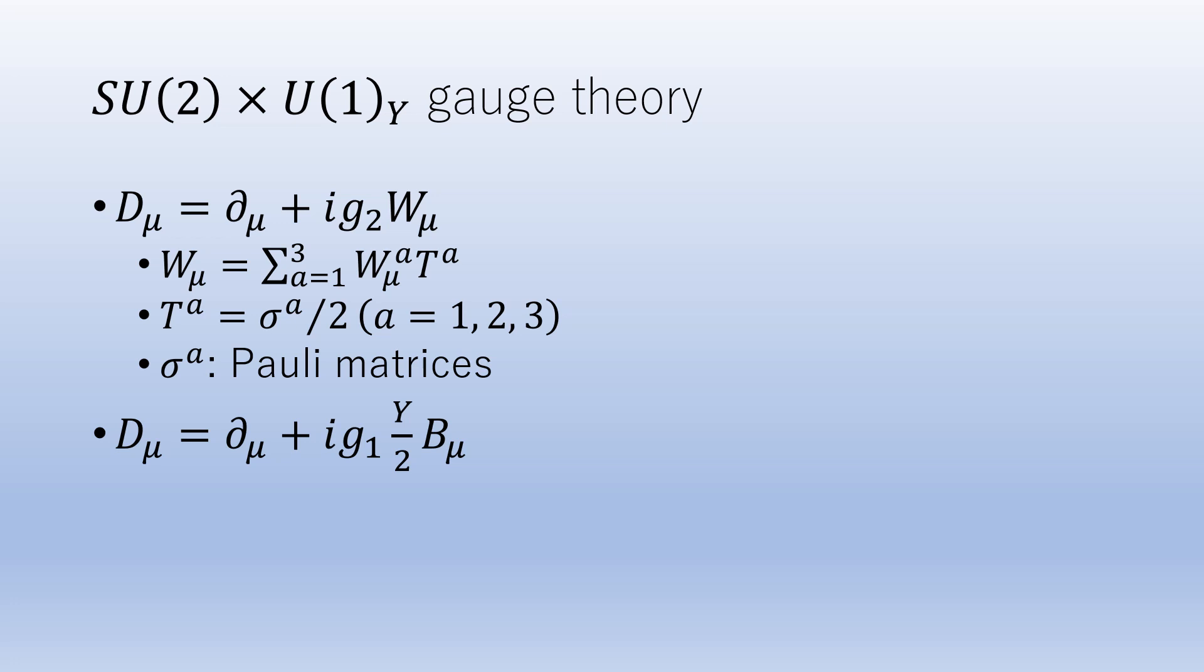Here, G₂ is a coupling constant that represents the strength of the SU(2) gauge interaction. On the other hand, right-handed quarks and leptons are invariant under the SU(2) gauge transformation, so the derivative remains the same.